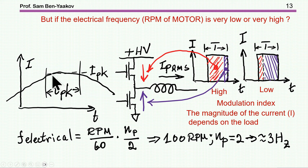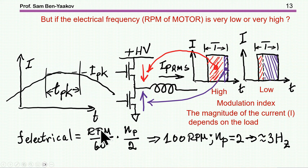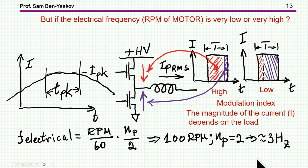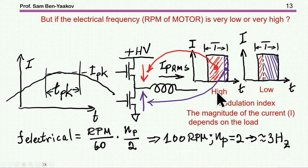If this high-duty-cycle period is long — meaning, for a motor, the RPM is low, which translates into a low electrical frequency — this could be a very long time in terms of the transistor's thermal behavior. For example, at low RPM with high torque, like starting a car uphill, the electrical frequency might be 3 Hz. We then have a situation where a high-current, high-duty-cycle condition persists for a long duration.